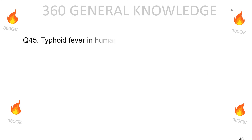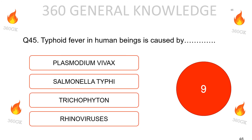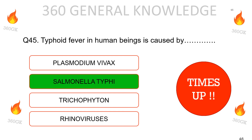Typhoid fever in human beings is caused by: Plasmodium vivax, Salmonella typhi, Trichophyton, or rhinoviruses? The correct answer is Salmonella typhi.